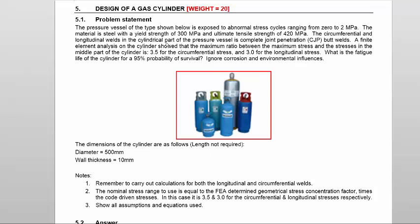The circumferential and longitudinal welds in the cylindrical part of the pressure vessel are complete joint penetration butt welds. A finite element analysis showed that the maximum ratio between the maximum stress and the stress in the middle part of the cylinder is 3.5 for the circumferential stress and 3.0 for the longitudinal stress. What is the fatigue life of the cylinder for a 95% probability of survival? Ignore corrosion and environmental influences.